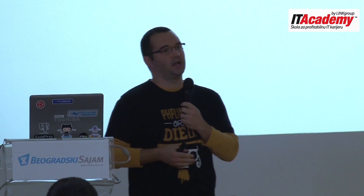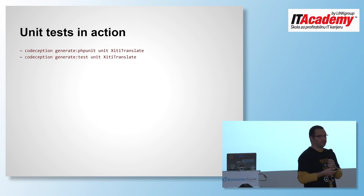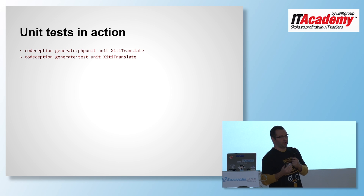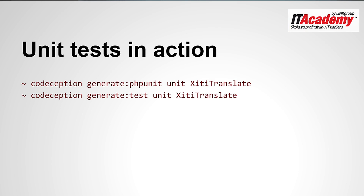Let's start from the bottom of the pyramid and write some unit tests. There are two ways to generate a unit test in Codeception. The first is 'generate:phpunit', which creates a file that extends from PHPUnit's test framework — a standard PHPUnit file. If you've already tried PHPUnit, you'd get the same thing. This lets you include your existing PHPUnit tests without any additional work needed to run them.